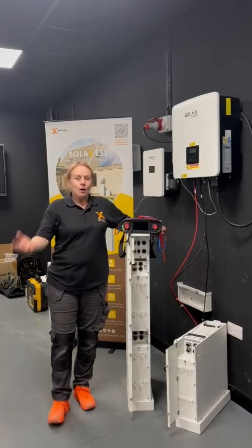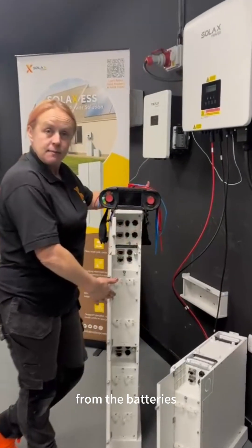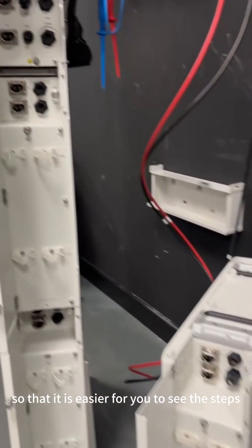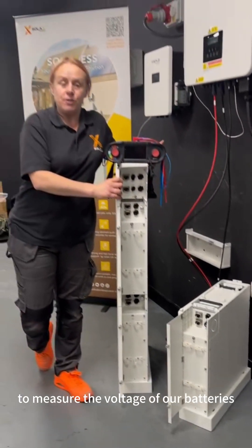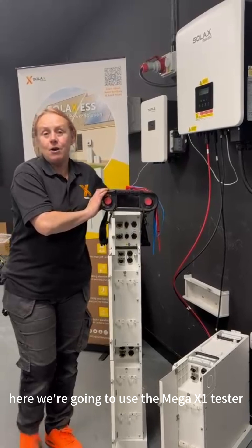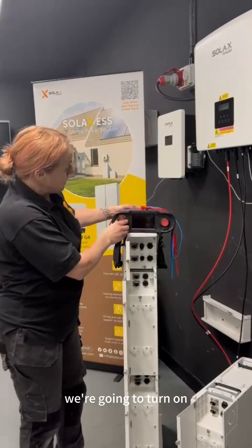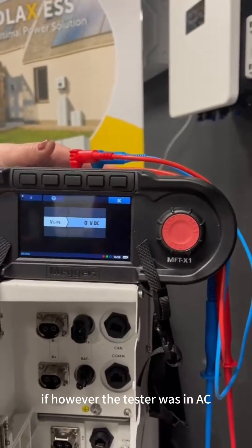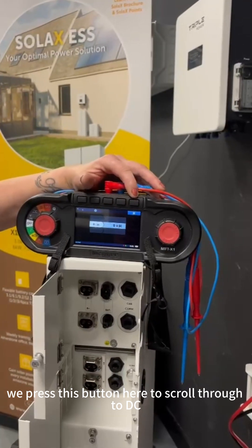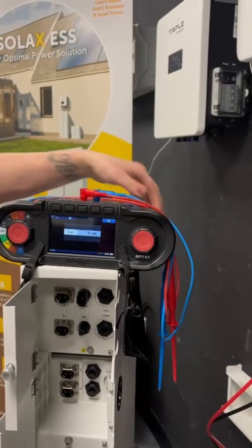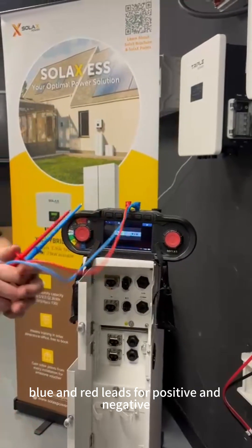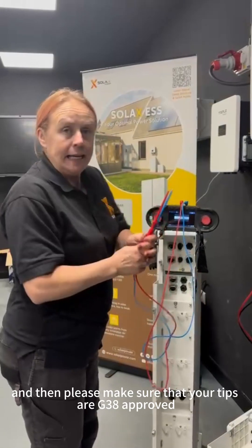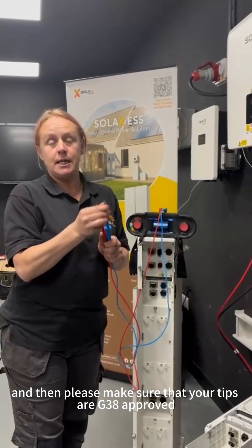Welcome back. We have disconnected all of our cables from the batteries and we've even disconnected the comms cables so that it is easier for you to see the steps we're about to take to measure the voltage of our batteries. Here we're going to use the Mega X1 tester. We need to make sure that we're going to be at DC. If the tester was in AC, we press this button here to scroll through to DC. We're also going to use blue and red leads for positive and negative. Red positive, blue negative. Please make sure that your tips are G38 approved.